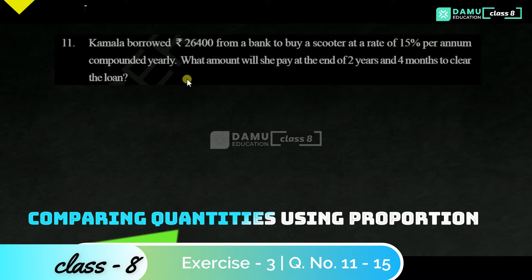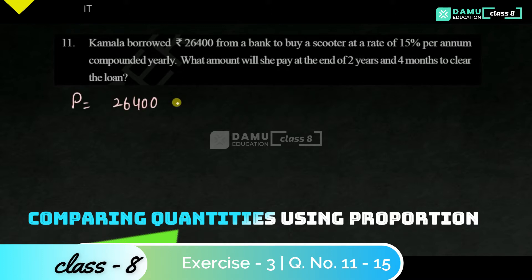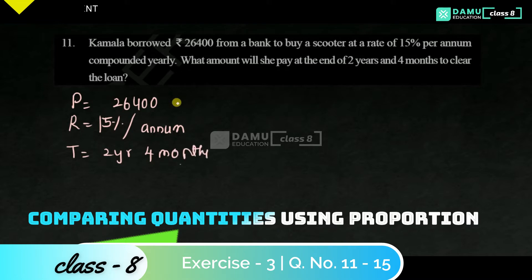Since it is compounded yearly, there is no need to change the rate of interest. If it were half-yearly, the rate would be divided by 2. The principal is 26,400, rate of interest is 15% per annum, and the time duration is 2 years 4 months. We first calculate for 2 years, then for the remaining 4 months.